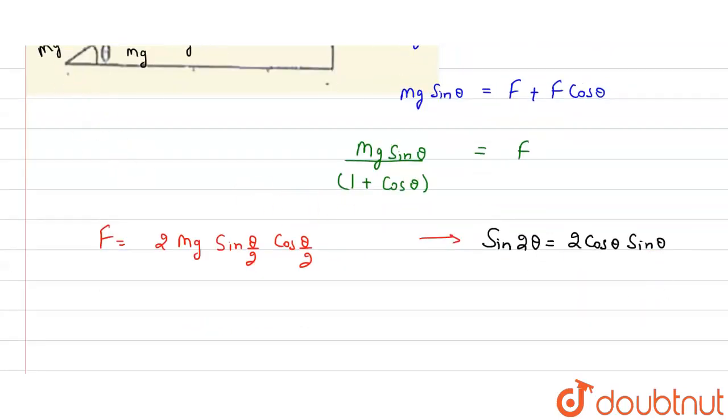For the lower part it will be 2 cos squared(theta/2) times cos(theta/2). Sorry, it will be only cos(theta/2).